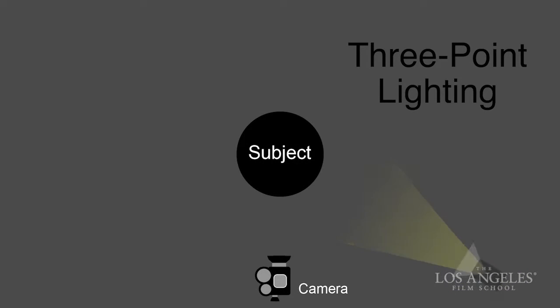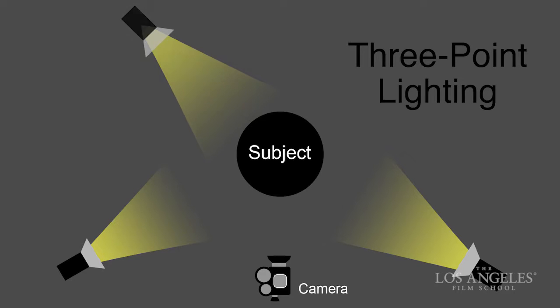Hey everybody, thanks for joining me again for another Facetime video. Today I want to talk to you about three-point lighting and what we're thinking about when we're rendering a three-dimensional subject in two-dimensional space like video or film. Three-point lighting is designed to give us a benchmark or a place to start lighting our subject. Without consideration of what the environment is offering in terms of illumination or what our backgrounds look like, three-point lighting just gets us started.